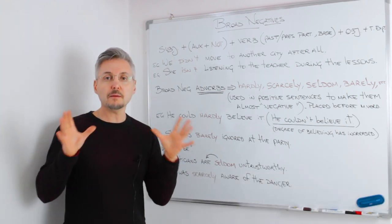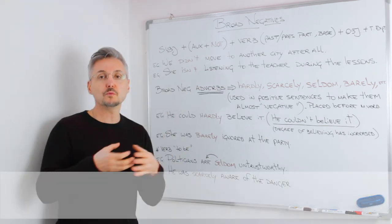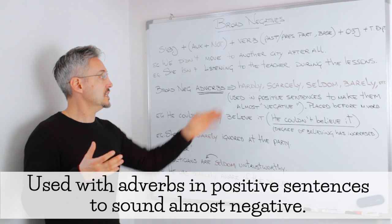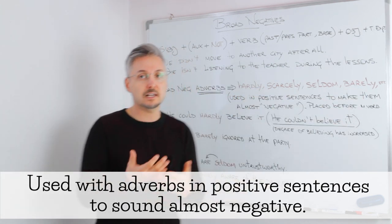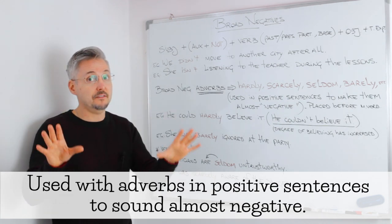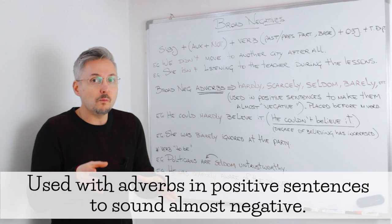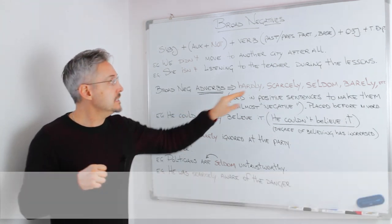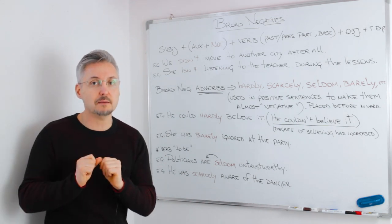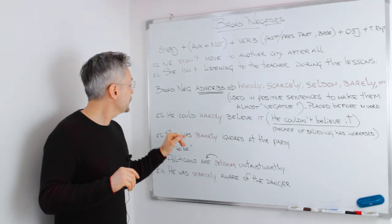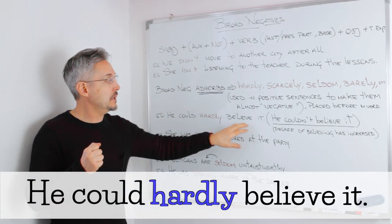So I'm going to talk about broad negatives right now. Broad negatives are used with adverbs such as 'hardly', 'scarcely', 'seldom', 'barely', etc. These are used in positive sentences to make them more or less — or almost — negative. They are placed before the main verb, but there is one exception, which I will show you. So the example that I gave you: he could hardly believe it.